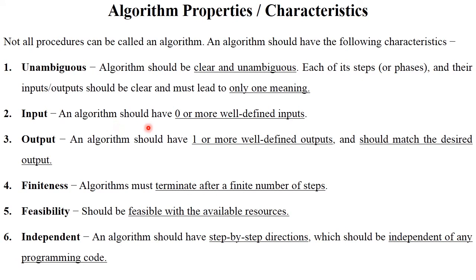The next one is input. Algorithm should have zero or more well-defined inputs. We will provide proper input or proper data types of input to the algorithm. Output: algorithm should have one or more well-defined outputs and should match the desired output. You write a specific algorithm in a proper format or in a more clear way so your output matches the desired output. The next one is finiteness. Algorithm must terminate after a finite number of steps — there are a specific number of steps you should write in an algorithm. Next, feasibility: it should be feasible with the available resources — proper database, proper data structure, proper programming languages should be used while writing the algorithm.